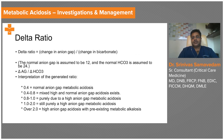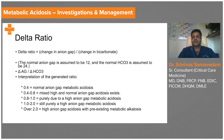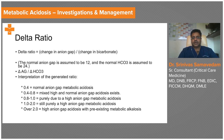What is the delta ratio? The delta ratio is the change in the anion gap divided by the change in the bicarbonate. The normal anion gap is assumed to be 12 and the normal bicarbonate is assumed to be 24. So the formula is: (measured anion gap − 12) divided by (24 − measured bicarbonate), which gives you the delta ratio.